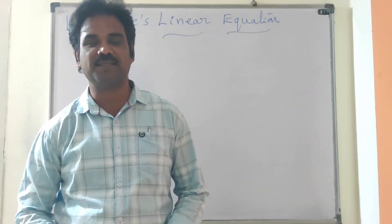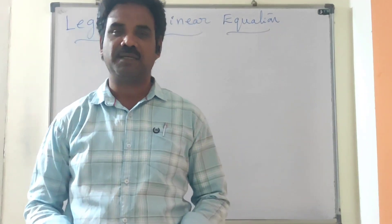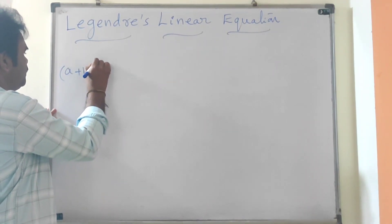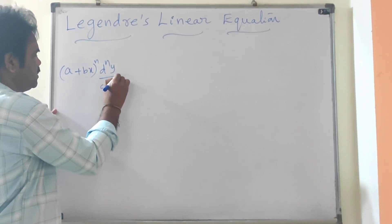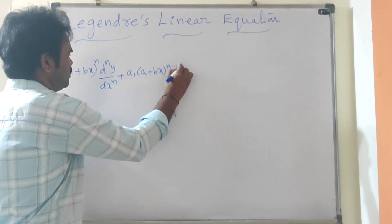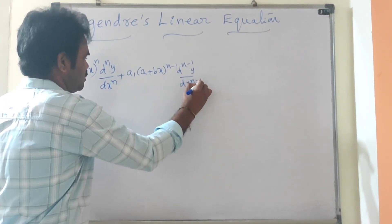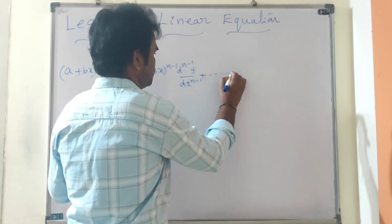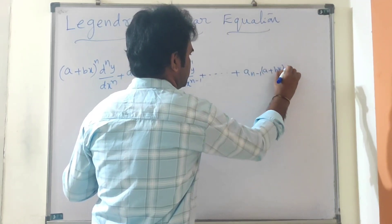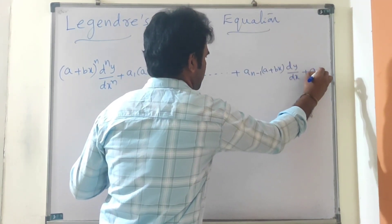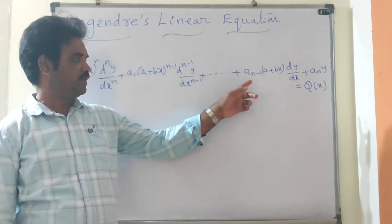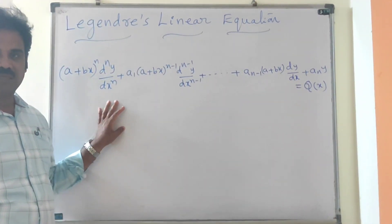Hello friends, today's topic is Legendre's linear differential equation. This is just the same as Cauchy's linear equation. An equation of the form (a + bx)^n · d^n y/dx^n plus a₁(a + bx)^(n-1) · d^(n-1)y/dx^(n-1) plus and so on plus a_(n-1)(a + bx) dy/dx plus a_n · y equals Q(x), where a₁, a₂, ..., a_n are constants. This is called Legendre's linear equation.